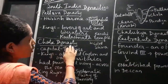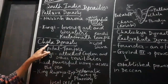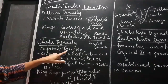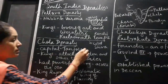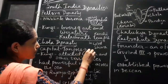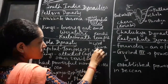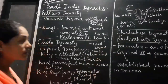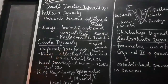Let us learn about the Chola dynasty. The Chola dynasty's capital is in Tanjur, which is in Tamil Nadu. We call it Tanjur in the early period, and now it is known as Tanjur.